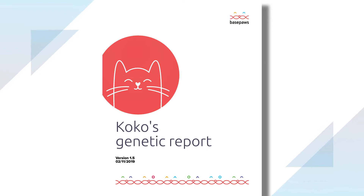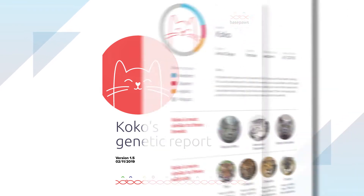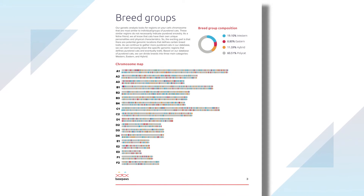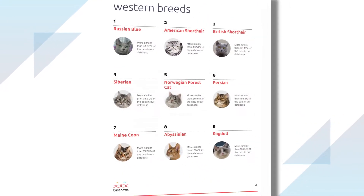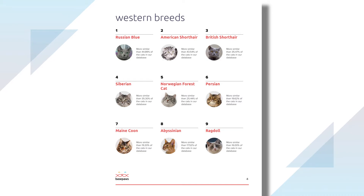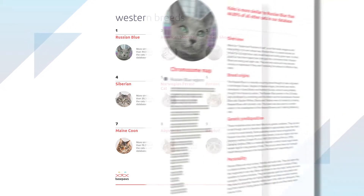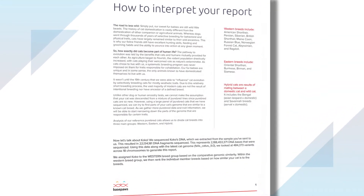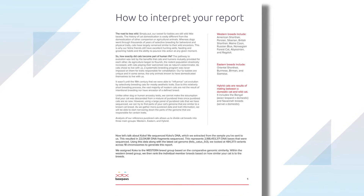The report has three main portions: your cat's summary, your cat's breed group similarities with chromosome painting, and a breakdown of your cat's most similar breeds. We have also included information about feline genetic and breed history, as well as some notes about our process to help with any questions you may have.